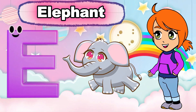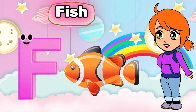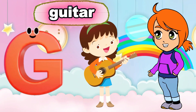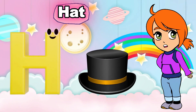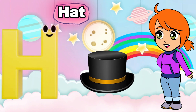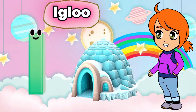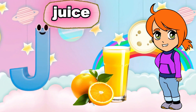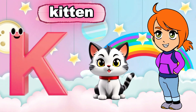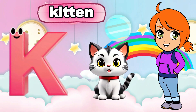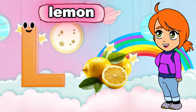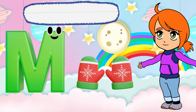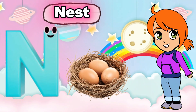E is for Elephant, e-e-e-elephant. F is for Fish, f-f-f-fish. G is for Guitar, g-g-guitar. H is for Hat, ha-ha-hat. I is for Igloo, e-e-igloo. J is for Juice, j-j-j-juice.